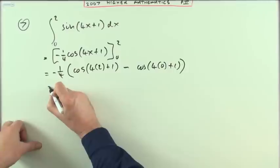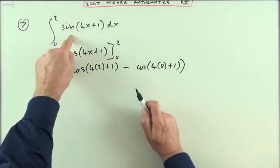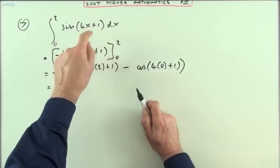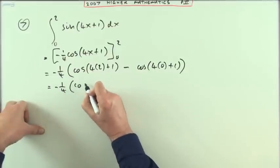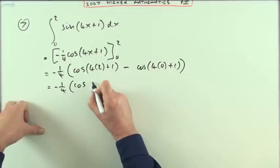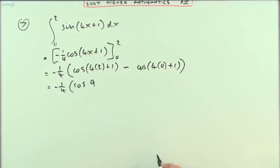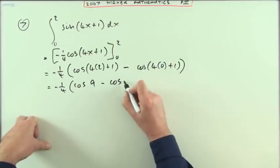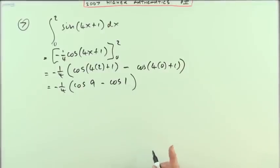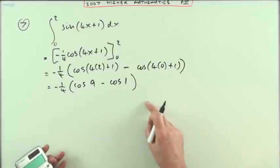The other thing is this: when you're integrating and differentiating, the angles have to be in radians. So when I write down for my next line a negative quarter of the cosine of nine, that doesn't mean nine degrees, that means nine radians. Minus the cosine of one, not one degree but one radian. So when you come to work this out, you have to put your calculator into radian mode.